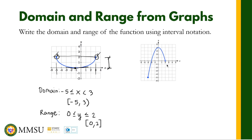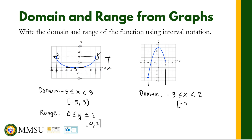Let's take a look at the other graph. The domain of this function starts from negative 3 — negative 3 is included — to positive 2, but positive 2 is not included. So X is greater than or equal to negative 3 but less than 2. Using interval notation, this is negative 3 to positive 2, open on the right.